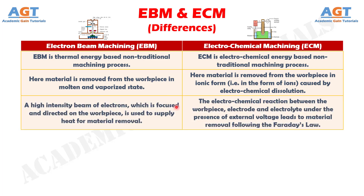Number 3: In electron beam machining, a high-intensity beam of electrons which is focused and directed on the workpiece is used to supply heat for material removal, whereas in electrochemical machining, the electrochemical reaction between the workpiece, electrode, and electrolyte under the presence of external voltage leads to material removal following Faraday's law.